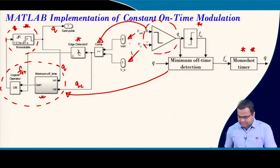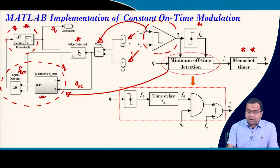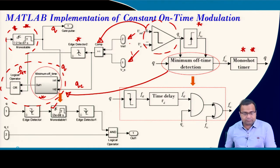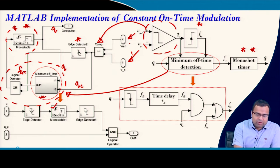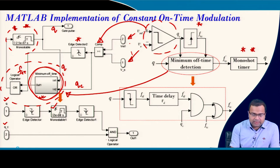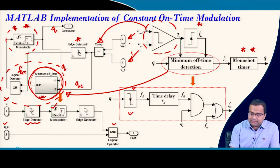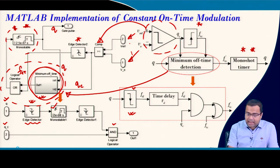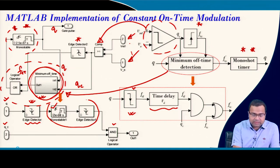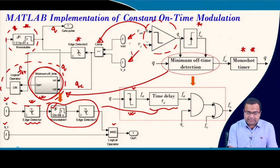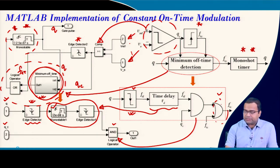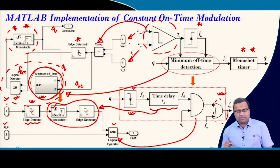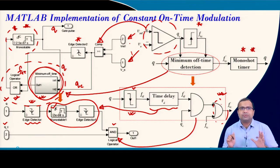If you go inside the monoshot timer block, it takes Q and Qc as inputs. Qc is directly ANDed. There is a negative edge detection circuit, and the delayed time is realized by two blocks in MATLAB. Then there is the AND gate, and the overall output is ORed. This is our OR signal. So this is how we implement the constant on-time logic in MATLAB.